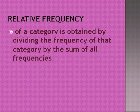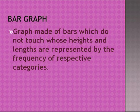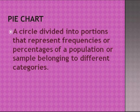The relative frequency of a category is obtained by dividing the frequency of that category by the sum of all frequencies. A percentage distribution is a list of all percentages for all categories. A bar graph is made of bars which do not touch, whose heights or lengths represent the frequency of respective categories. A pie chart is a circle divided into portions that represent the frequencies or percentages of a population or sample belonging to different categories.